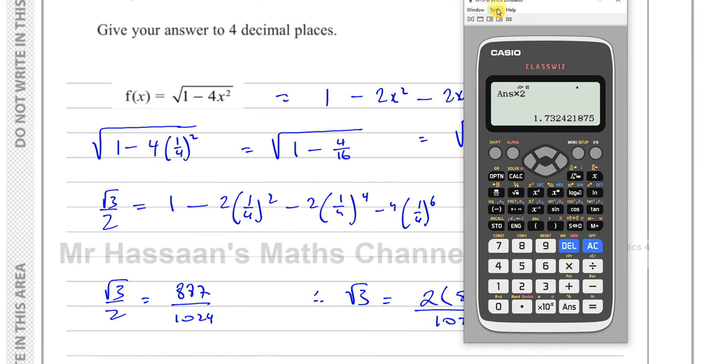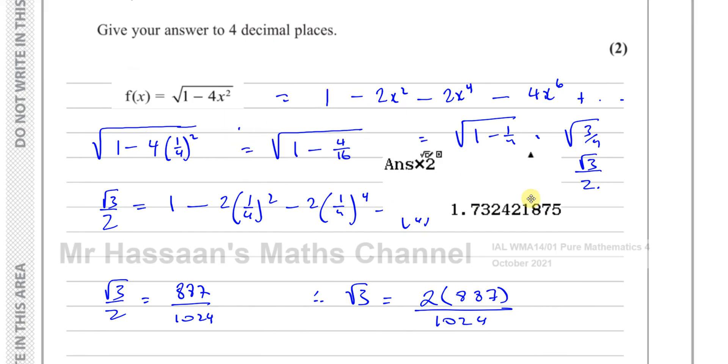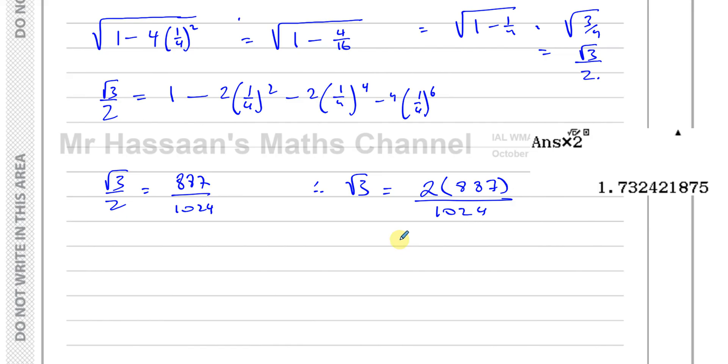So it gives you 1.732421. When you're doing your work in your book or in the exam, you have the calculator in front of you. 1.7324218. So 4 decimal places, it's going to be 1.7324. So there's the answer. So root 3 is approximately equal to this according to our expansion.